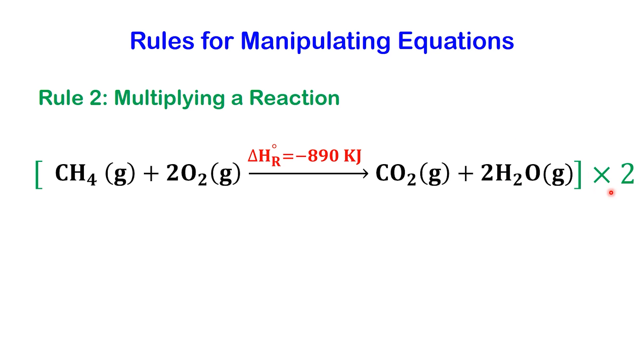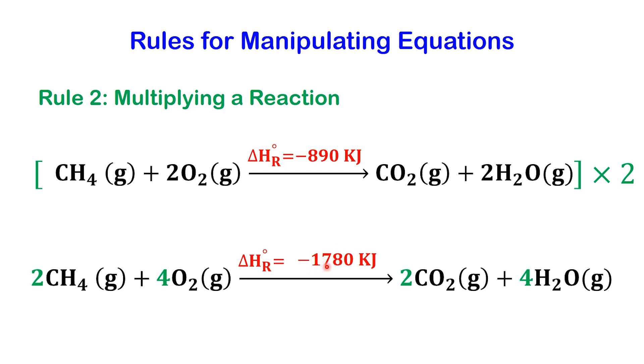doubling the methane combustion reaction gives 2 methane plus 4 O2 gives 2 carbon dioxide and 4 water. Delta H equals minus 1780 kJ.